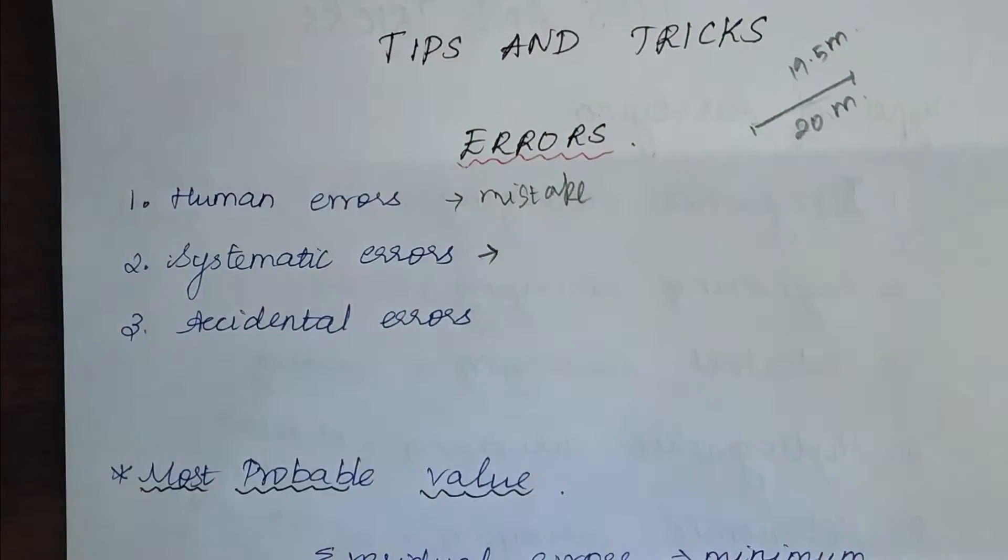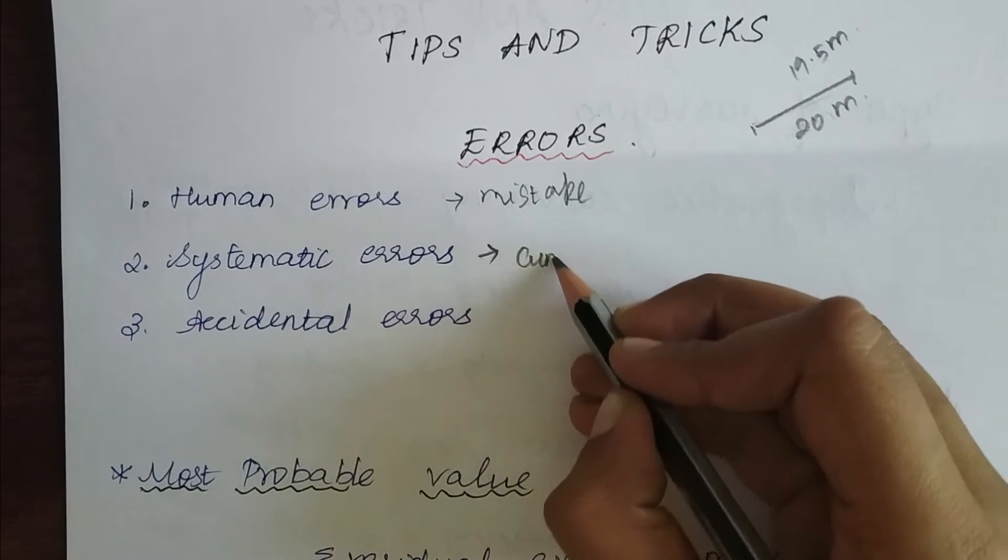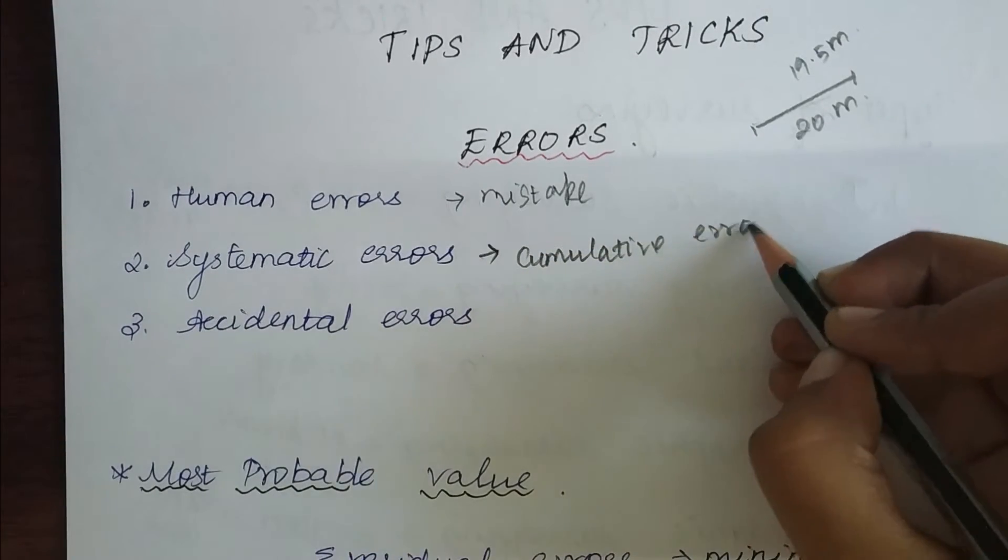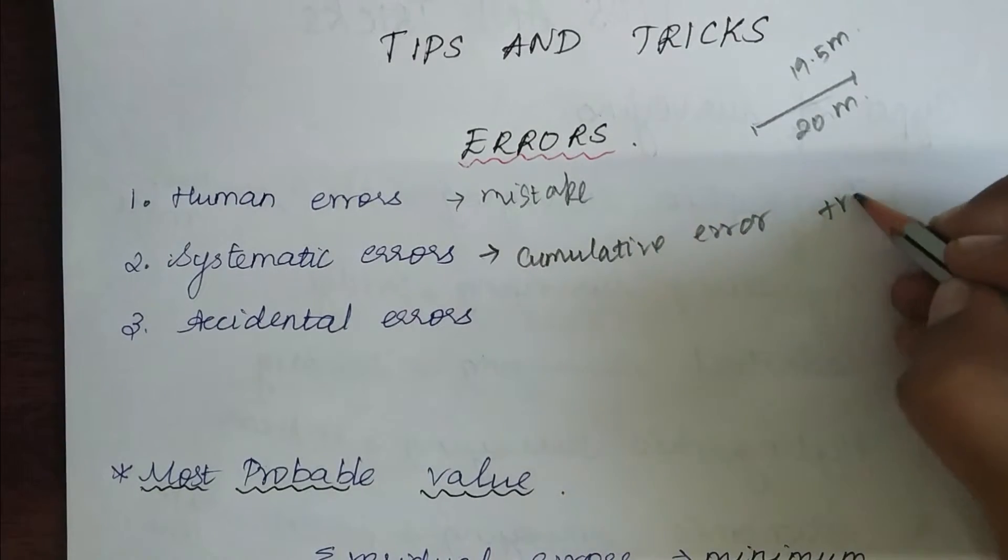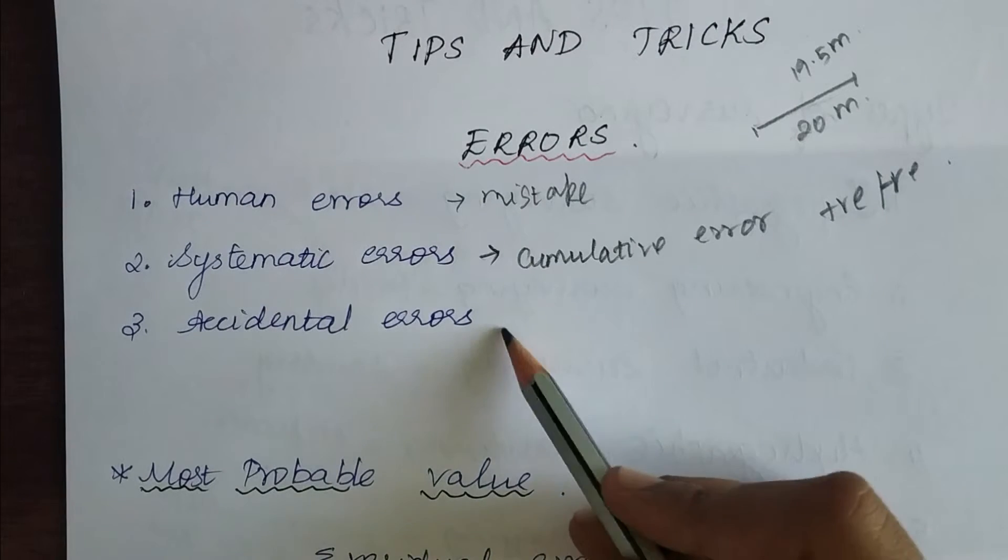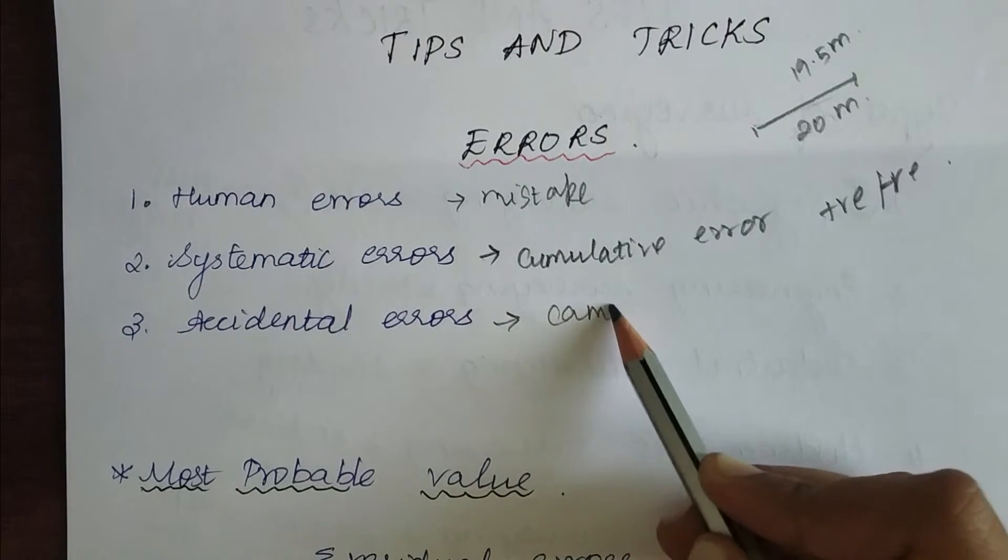Every time the tape is used, the error keeps accumulating. This type of error is called a cumulative error. It will be either only positive or only negative. Accidental errors are called compensating errors.